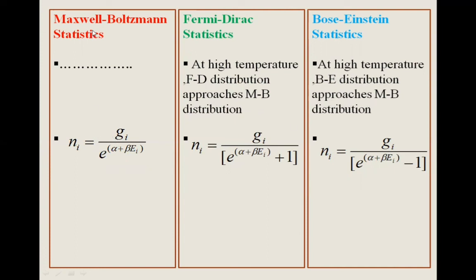In MB statistics, nᵢ = gᵢ / e^(α + βεᵢ). In Fermi-Dirac statistics, nᵢ = gᵢ / (e^(α + βεᵢ) + 1). In Bose-Einstein statistics, nᵢ = gᵢ / (e^(α + βεᵢ) − 1).